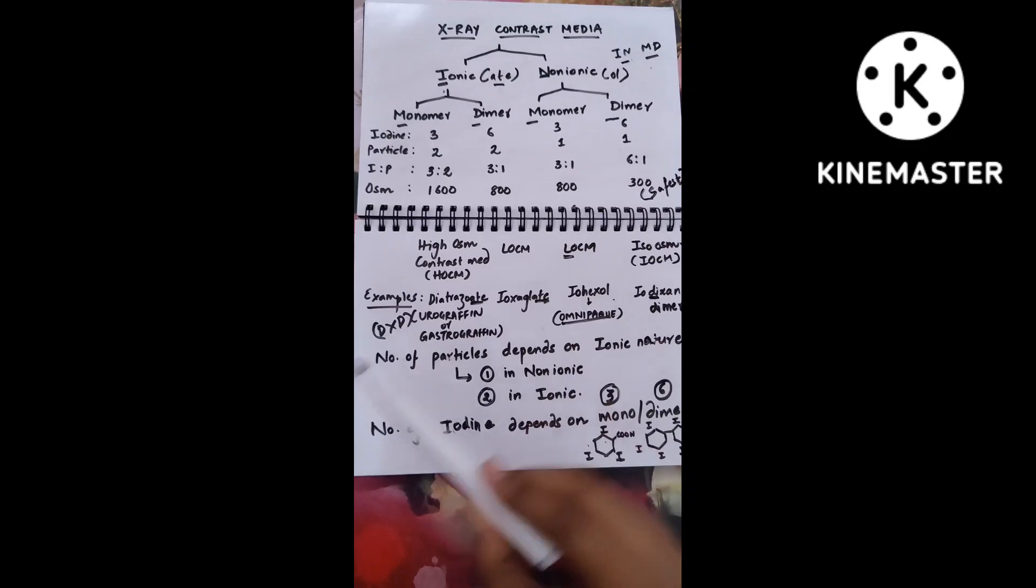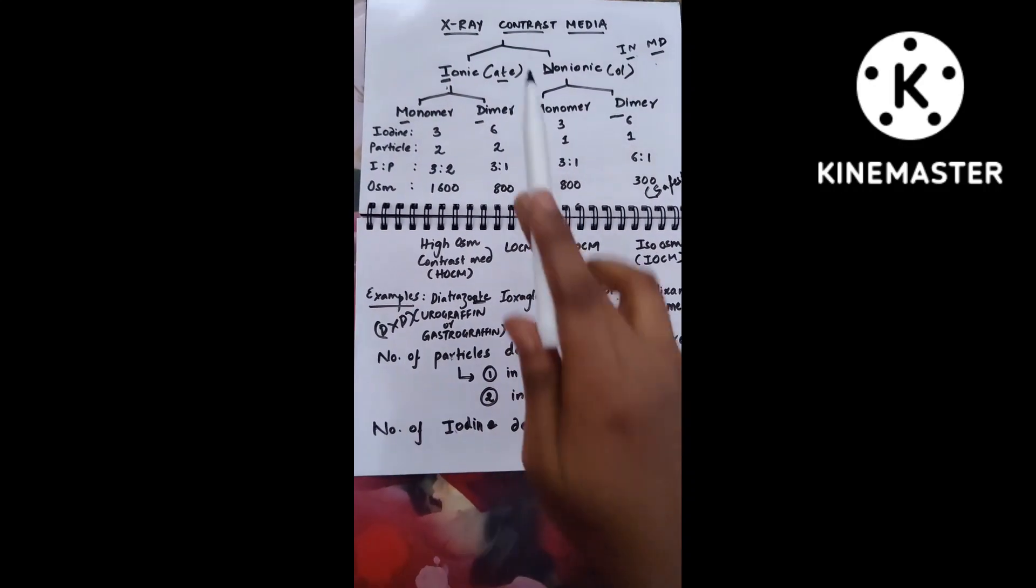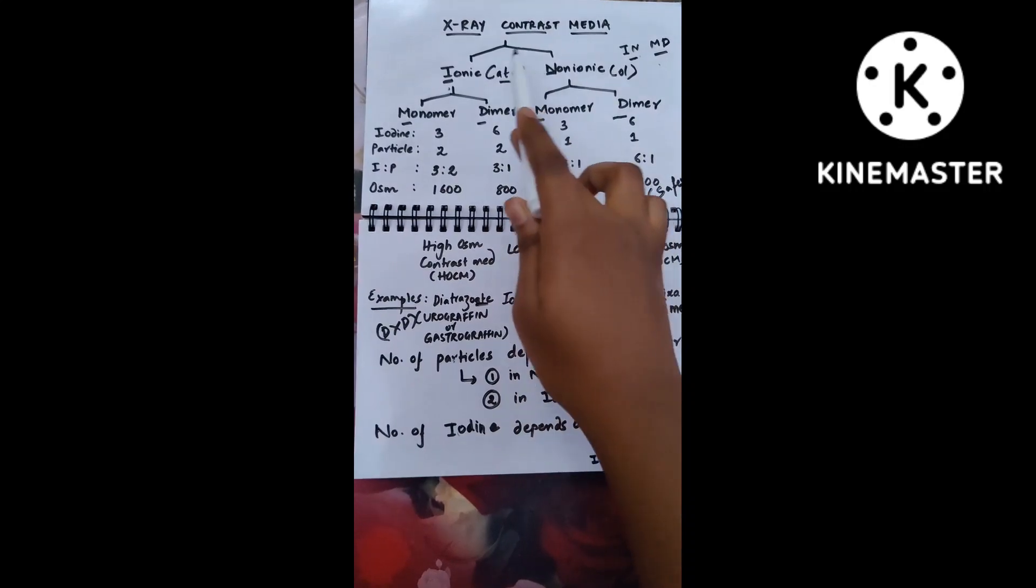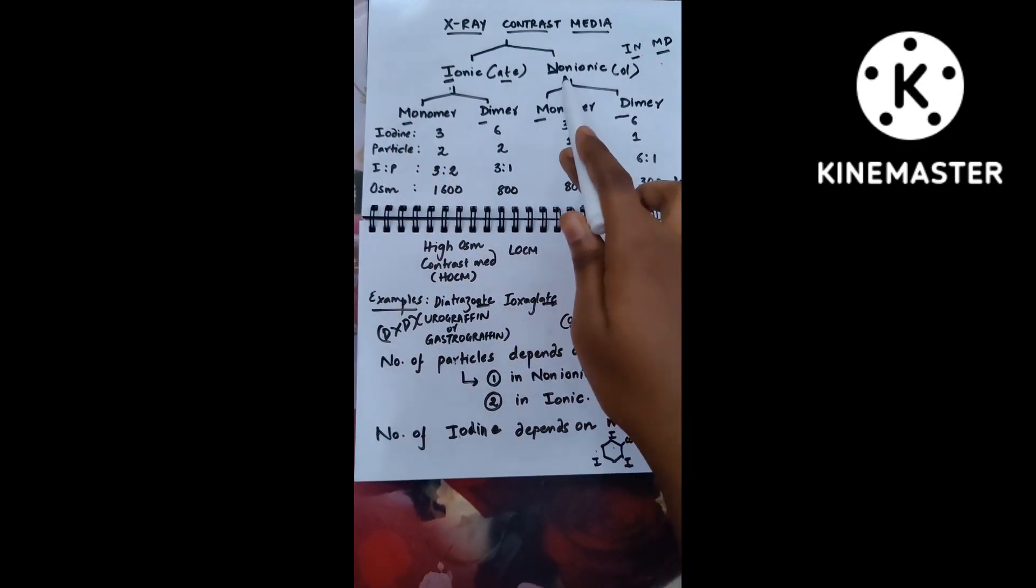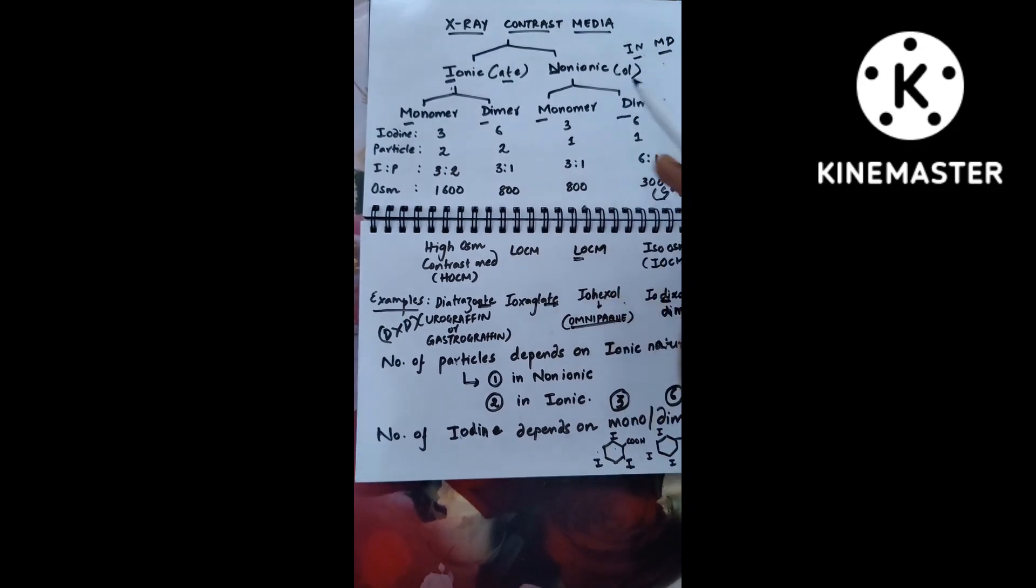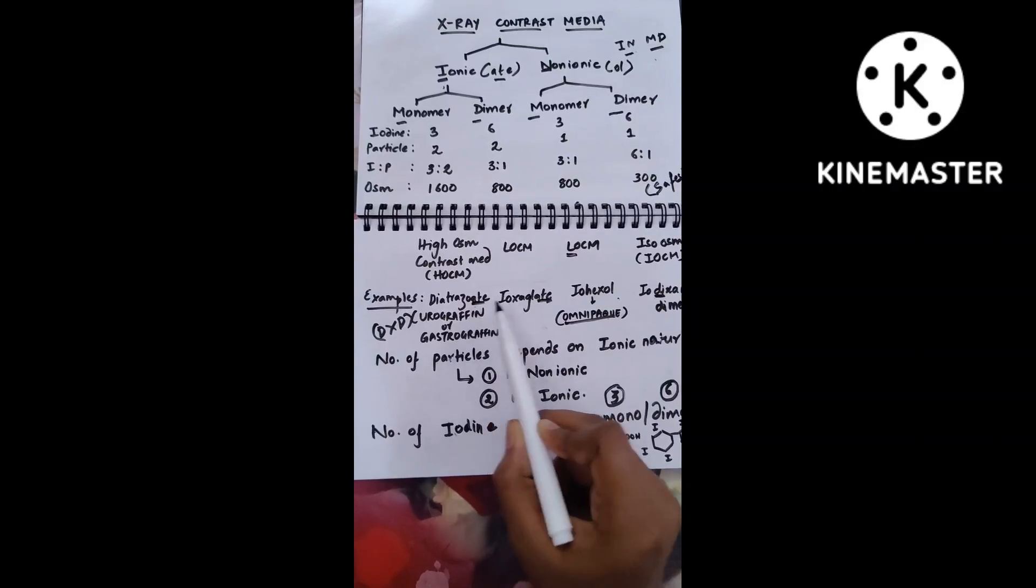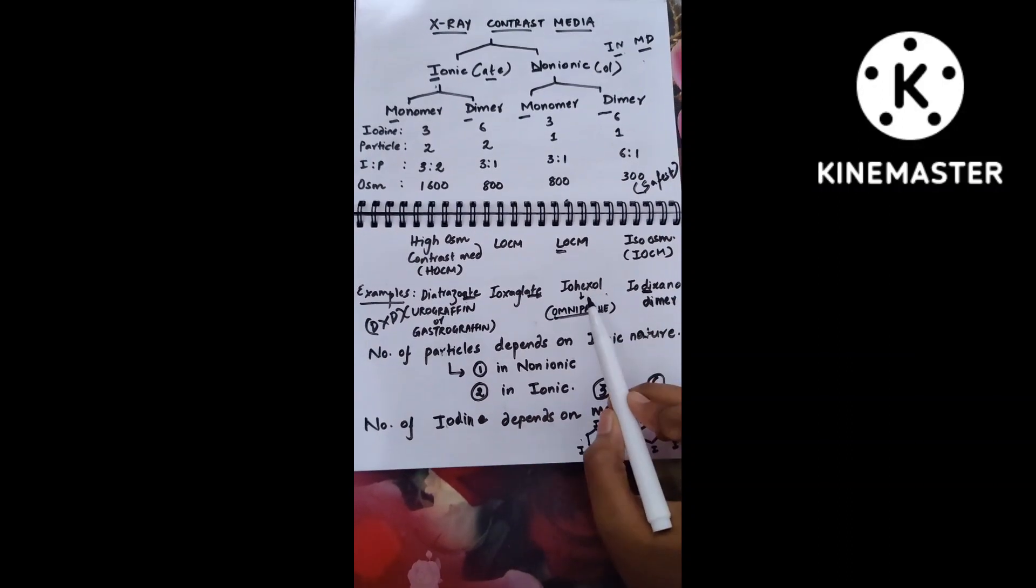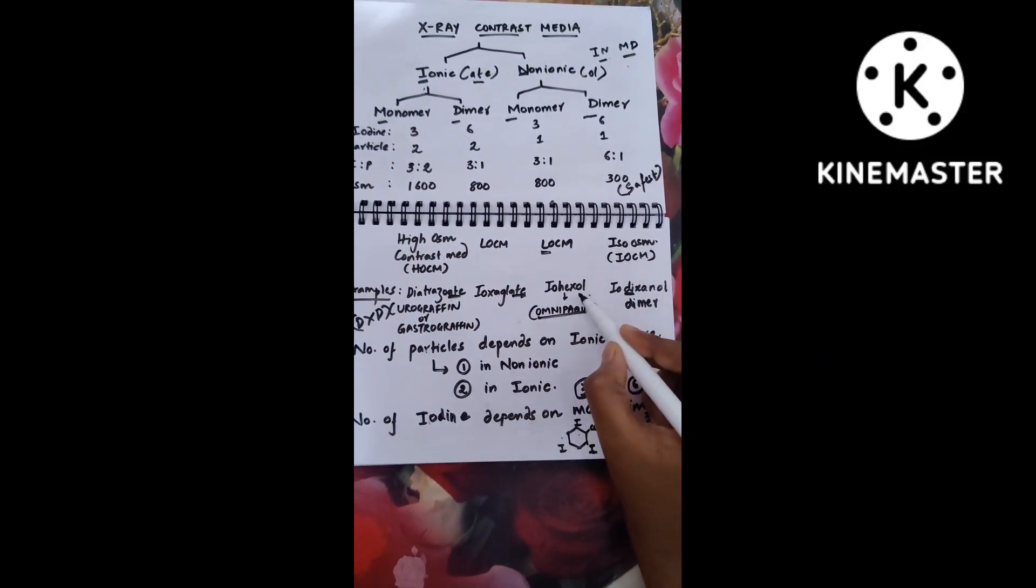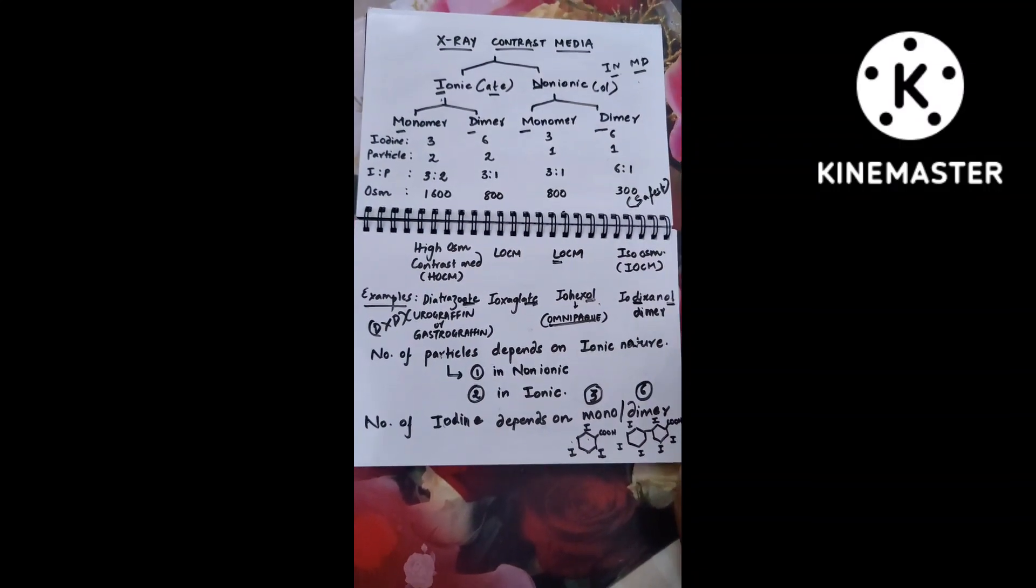Now let's learn about the examples, which is the main part. When you discuss ionic things, it ends with 'ate.' If it's non-ionic, it ends with 'ol,' like alcohol. Look at the names: both ionic examples have 'ate' - diatrizoate and ioxaglate. Both non-ionic have 'ol' at the end - iohexol and iodixanol.